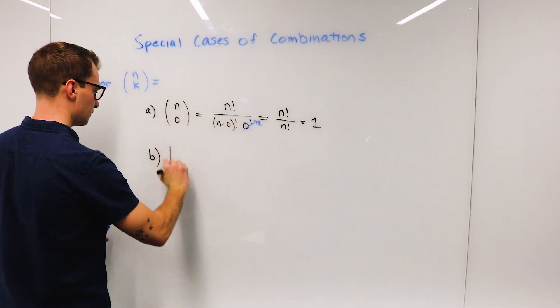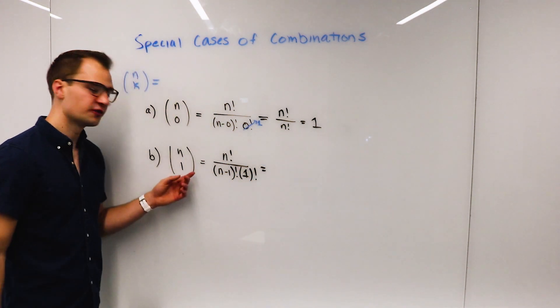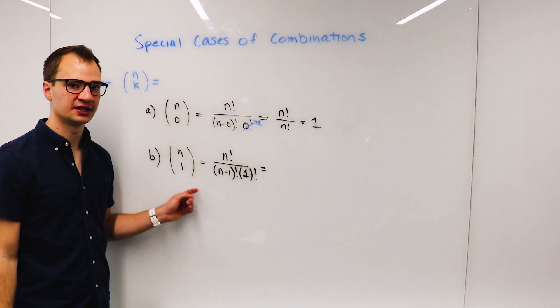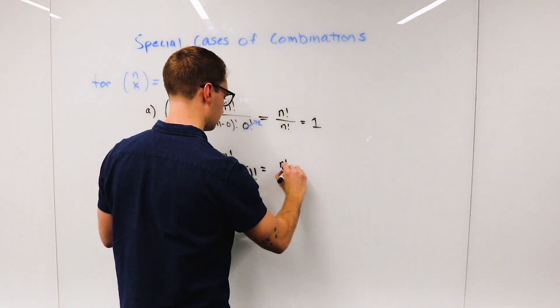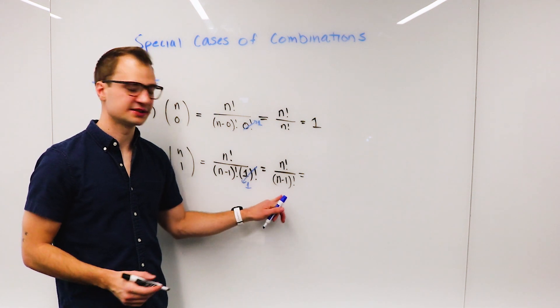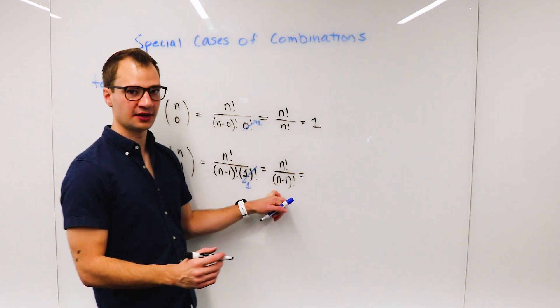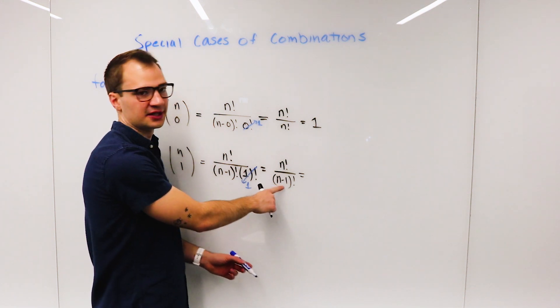Now, if we're voting one person onto a committee out of n potential candidates, the answer to this is simply n. And we can see that if this was 10 and this was 10 minus 1, which is 9, everything cancels out except the original n value, that 10.